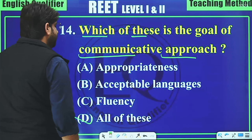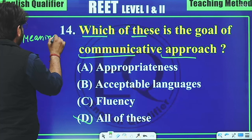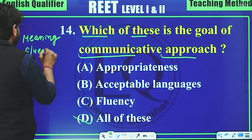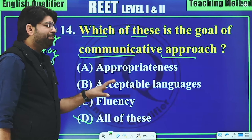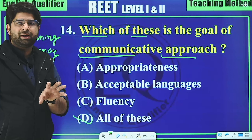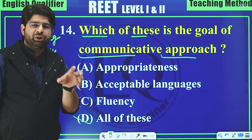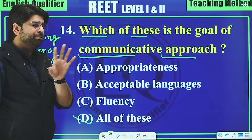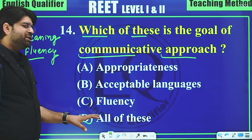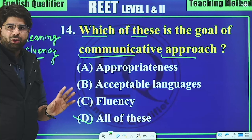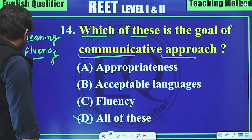The communicative approach (CLT) has 5 important goals: meaning, fluency, appropriateness, acceptable language, and fluency. So when we study the communicative language approach, all of these — appropriateness, acceptable language, and fluency — are covered, making 'all of these' the correct answer.